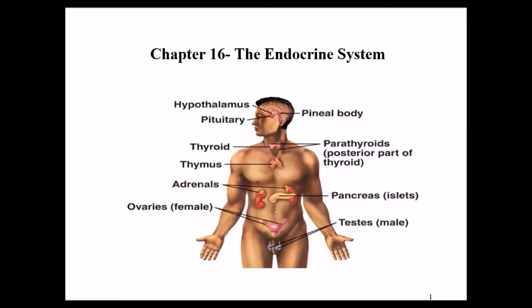In this video, I want to go over a few things in chapter 16 on the endocrine system. One of the first things you'll see on this slide is a representation of some of the most important endocrine organs, glands, and tissues. We'll talk about most of these in another video. Towards the end of the chapter, we'll talk about each one and the hormones and chemicals they produce. We'll also be going over many of these in lab.